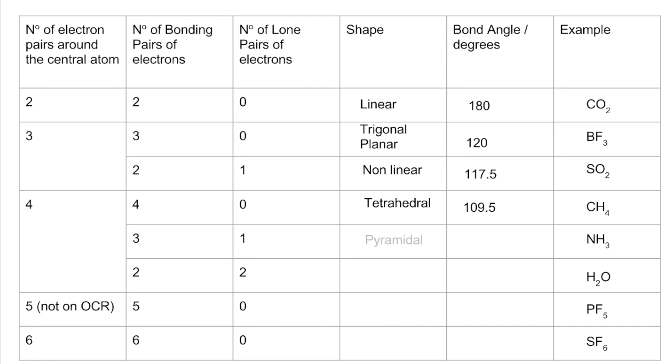Three and one, we get a pyramidal shape. And our starting angle is still 109.5, but we're going to take two and a half off that from the extra repulsion from the lone pair, so we come down to 107. Example of that could be ammonia.